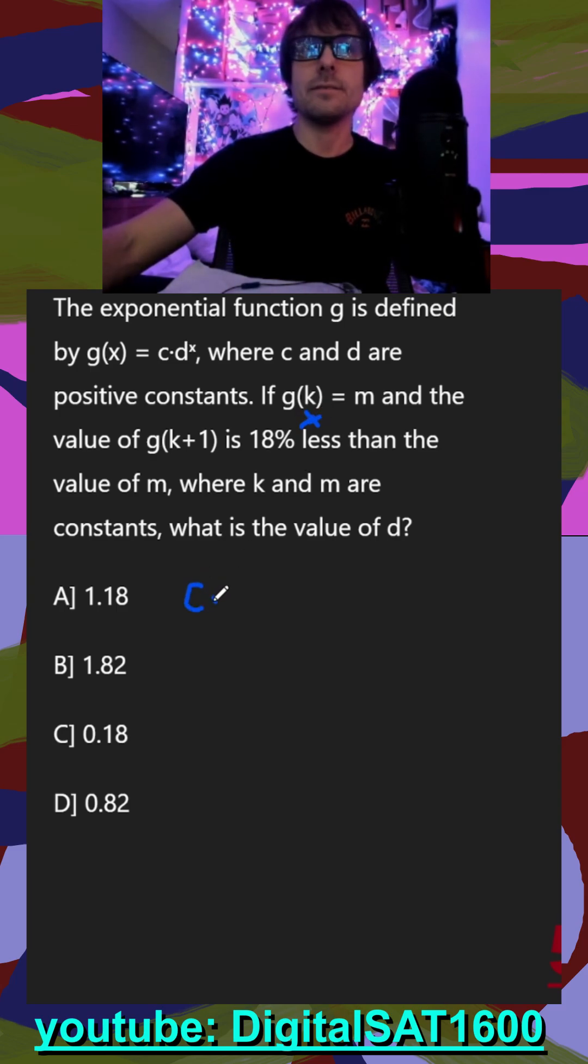g of k is just going to be c times d raised to the k. And they're saying this is going to be equal to m, correct? And then the value of g of k plus one is 18% less than the value of m. It's the same thing. We're just substituting in for our x, k plus one.